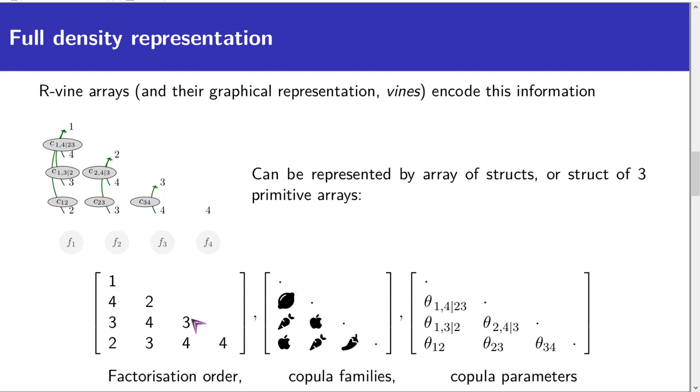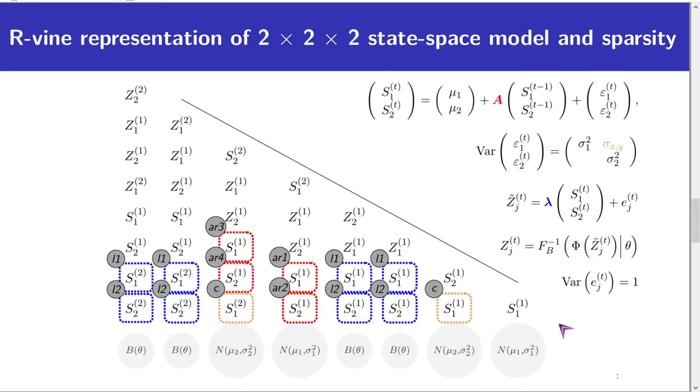For a more illuminating example, here are two equivalent representations of a state-space model with two factors, two satellite variables, and two periods.